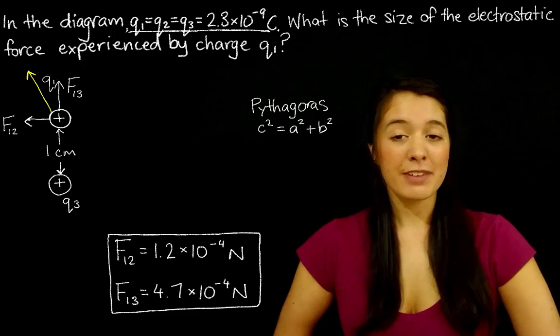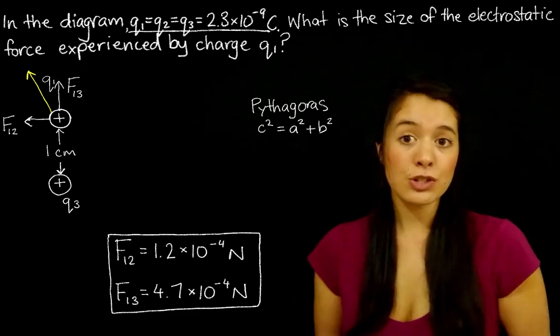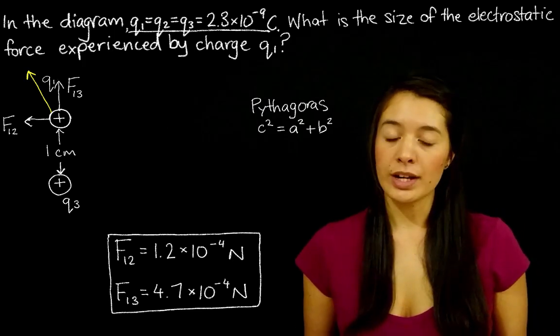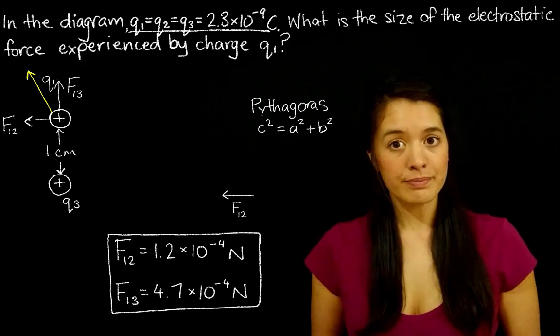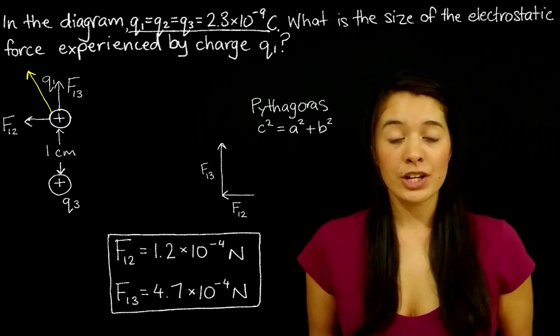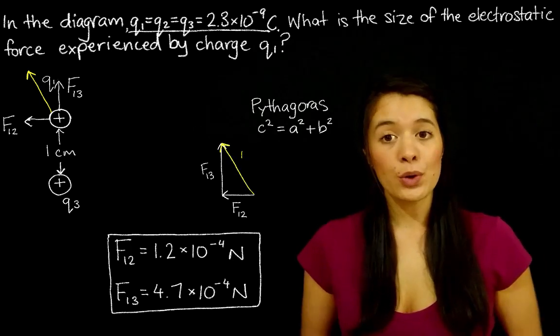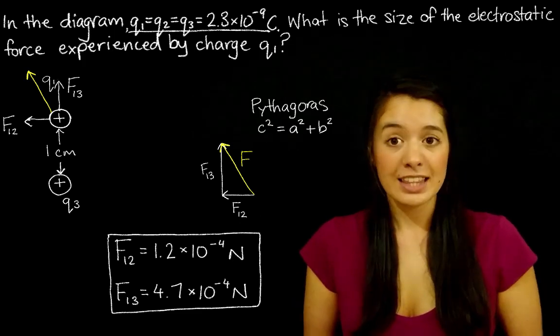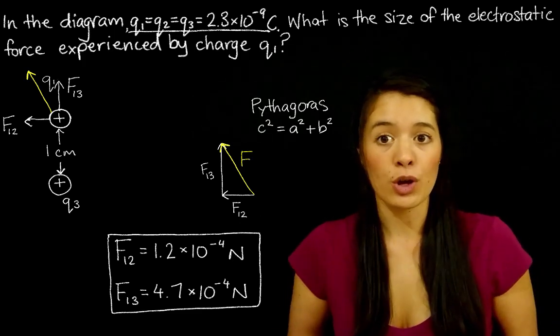So when you're doing vector addition using Pythagoras, it's usually a good idea to draw your vectors so that they make a triangle. So if we draw F12 and F13, when we add them, we're going to get a new vector, which we're going to call F, because this is the overall force experienced by charge Q1. This F is what we have been looking for the whole time.